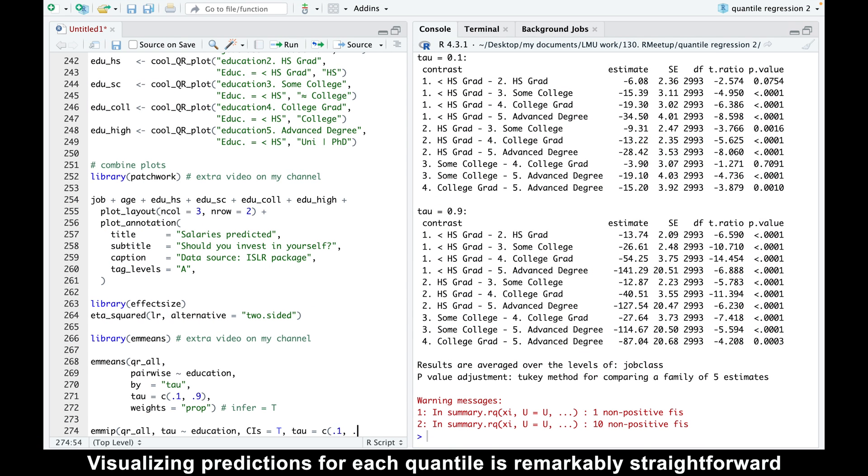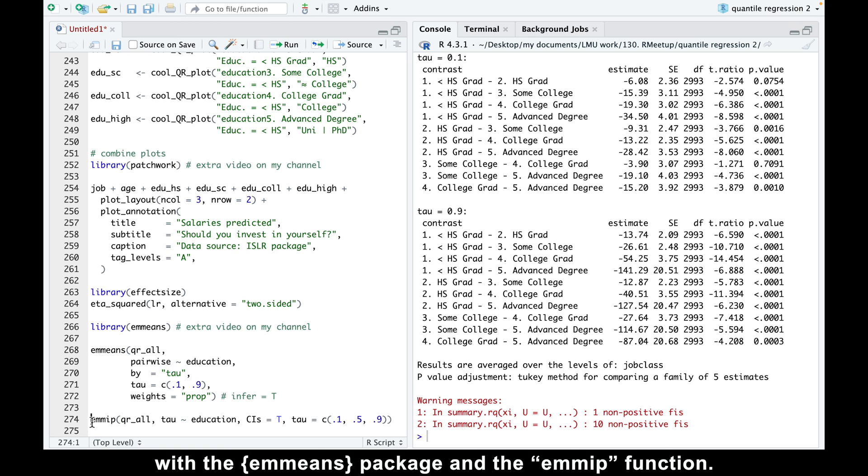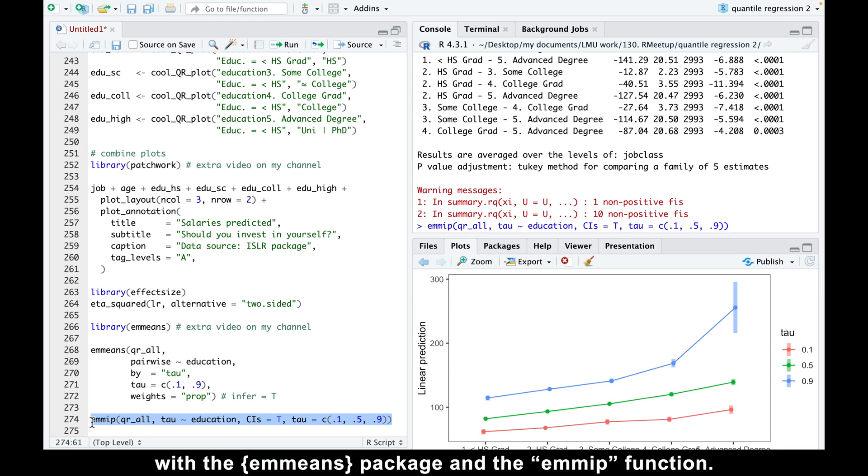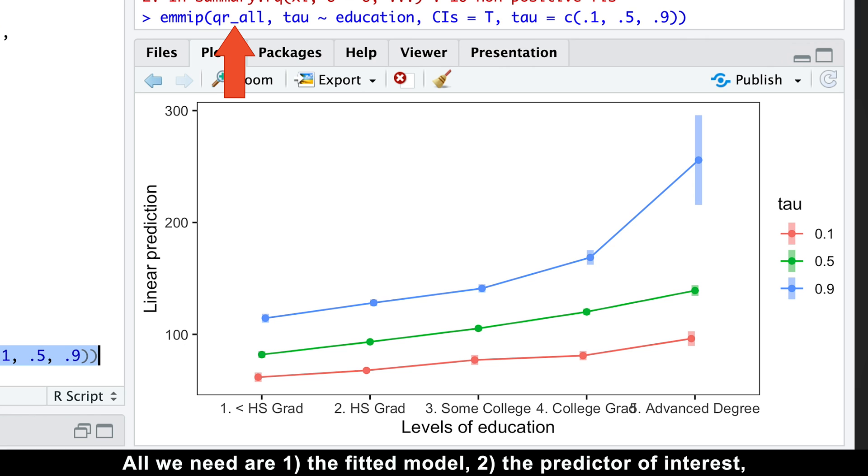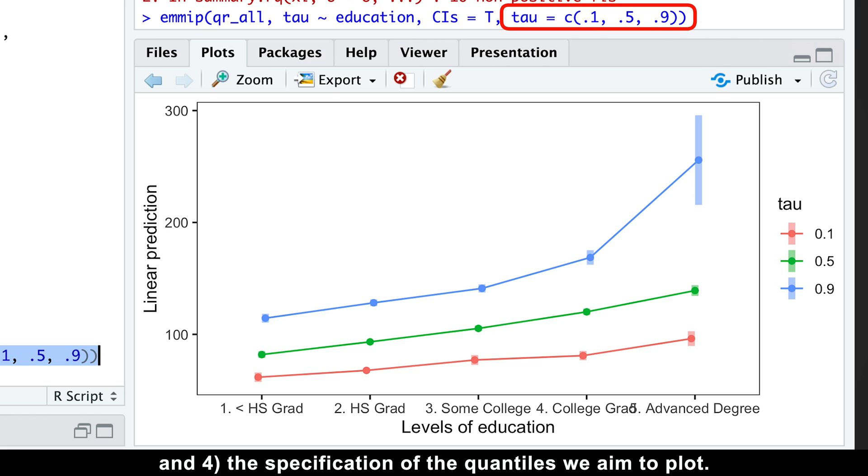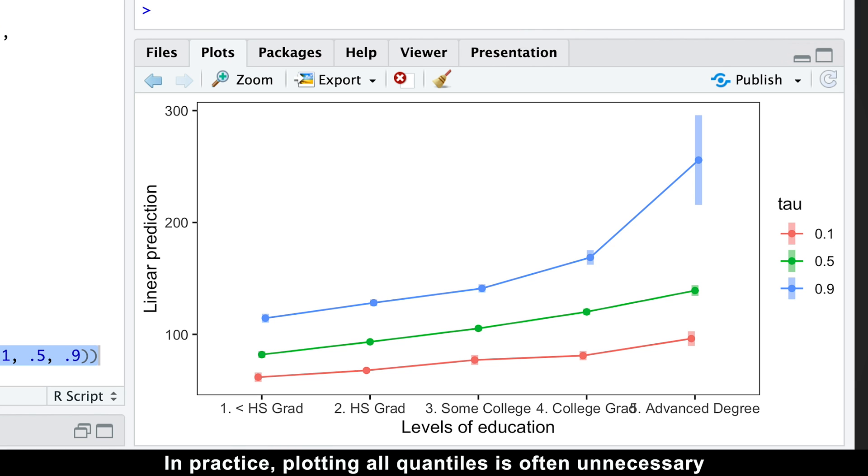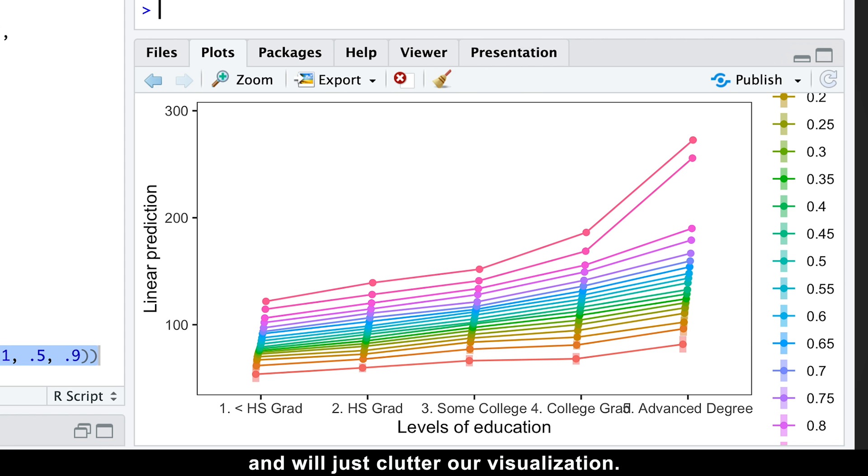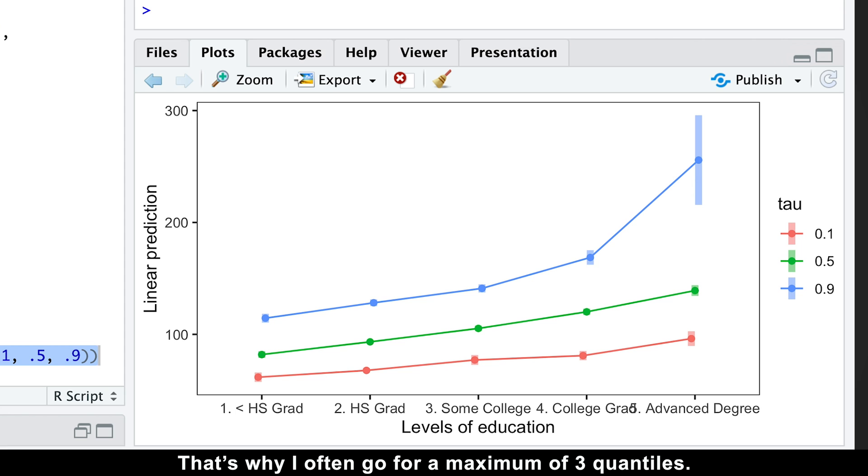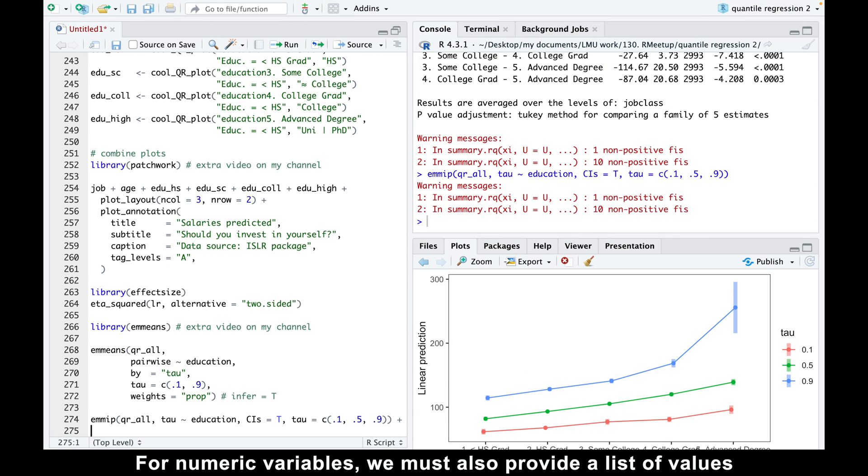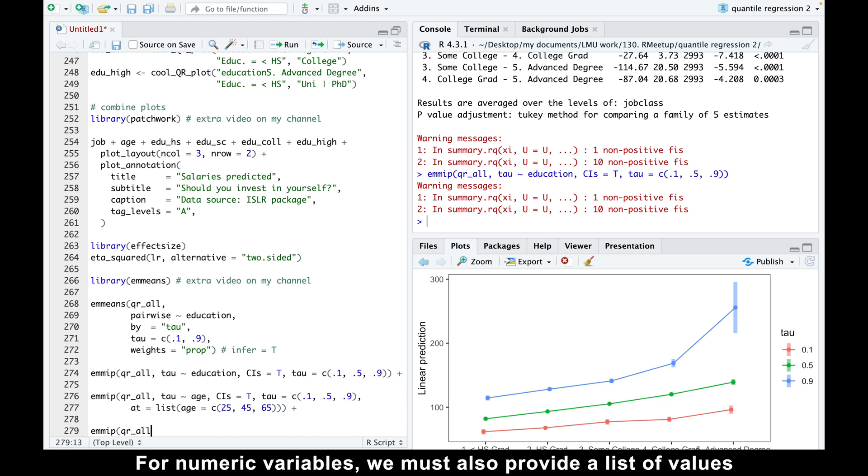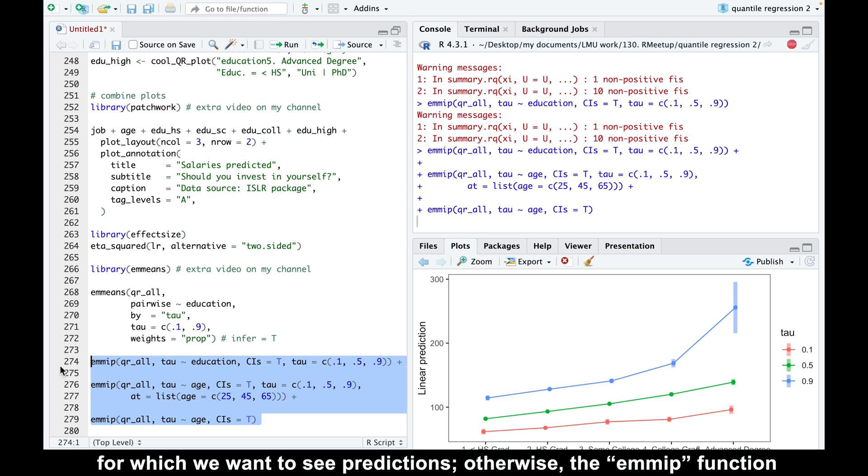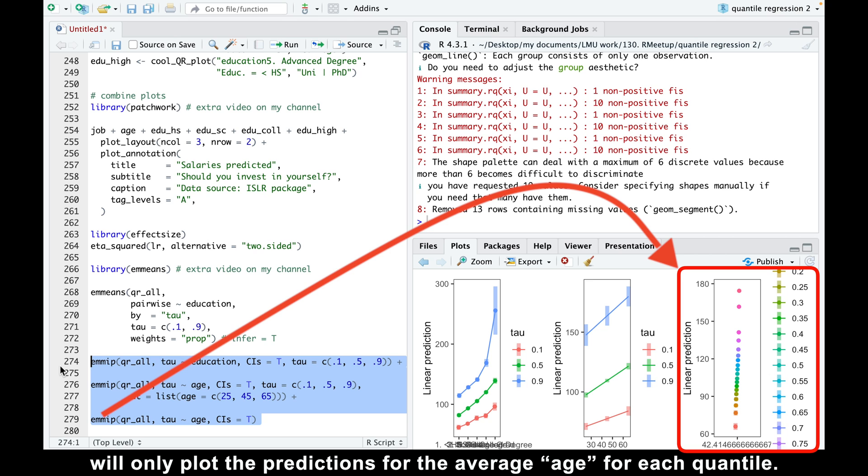Visualizing predictions for each quantile is remarkably straightforward with the emmeans package and the emmip function. All we need are the fitted model, the predictor of interest, the inclusion of confidence intervals, and the specification of the quantiles we aim to plot. In practice, plotting all quantiles is often unnecessary and will just clutter our visualization. That's why I often go for a maximum of three quantiles. For numeric variables, we must also provide a list of values for which we want to see predictions. Otherwise, the emmip function will only produce the predictions for the average age for each quantile.